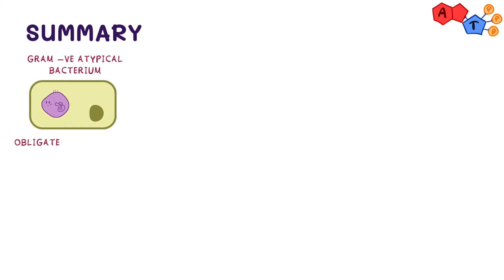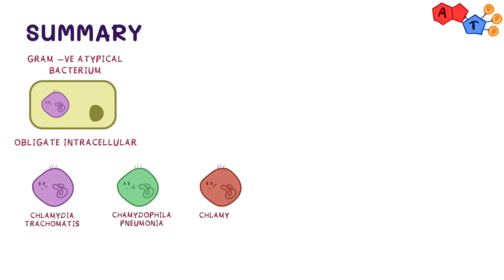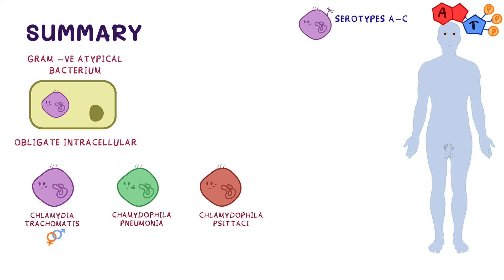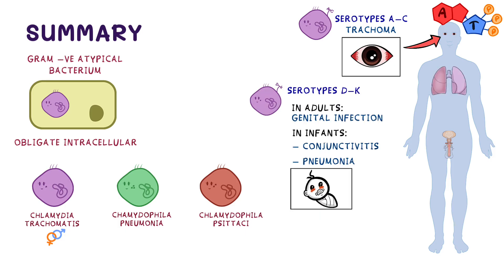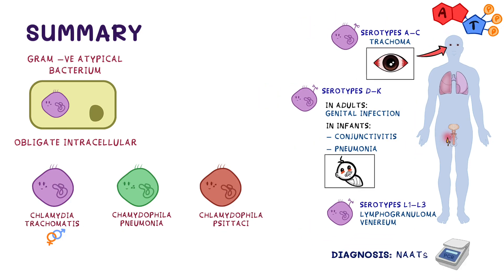To sum up: Chlamydia is a Gram-negative, atypical, obligate intracellular bacterium. Three species are pathogenic to humans: Chlamydia trachomatis, Chlamydophila pneumoniae, and Chlamydophila psittaci. Chlamydia trachomatis is sexually transmitted and divided into serotypes: A to C cause trachoma; D to K cause genital infection in adults, infant conjunctivitis, and pneumonia; L1 to L3 cause lymphogranuloma venereum. Diagnosis is by nucleic acid amplification tests. Treatment is macrolides or tetracyclines for C. trachomatis, azithromycin or clarithromycin for C. pneumoniae, and doxycycline for C. psittaci.